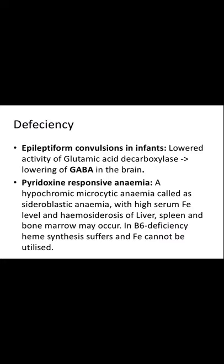A pyridoxin-responsive anemia — a hypochromic microcytic anemia called sideroblastic anemia — with high serum iron levels and hemosiderosis of the liver, spleen, and bone marrow may occur. There will be iron present but no heme, so hemoglobin cannot be formed, the serum iron is increased and gets deposited in the liver, spleen, and bone marrow.